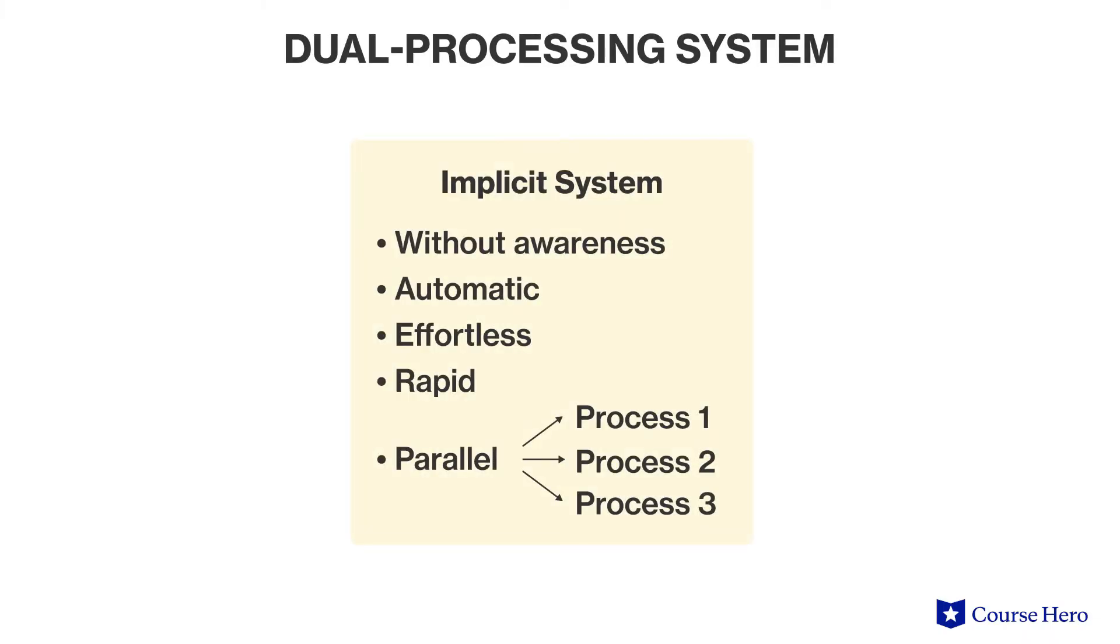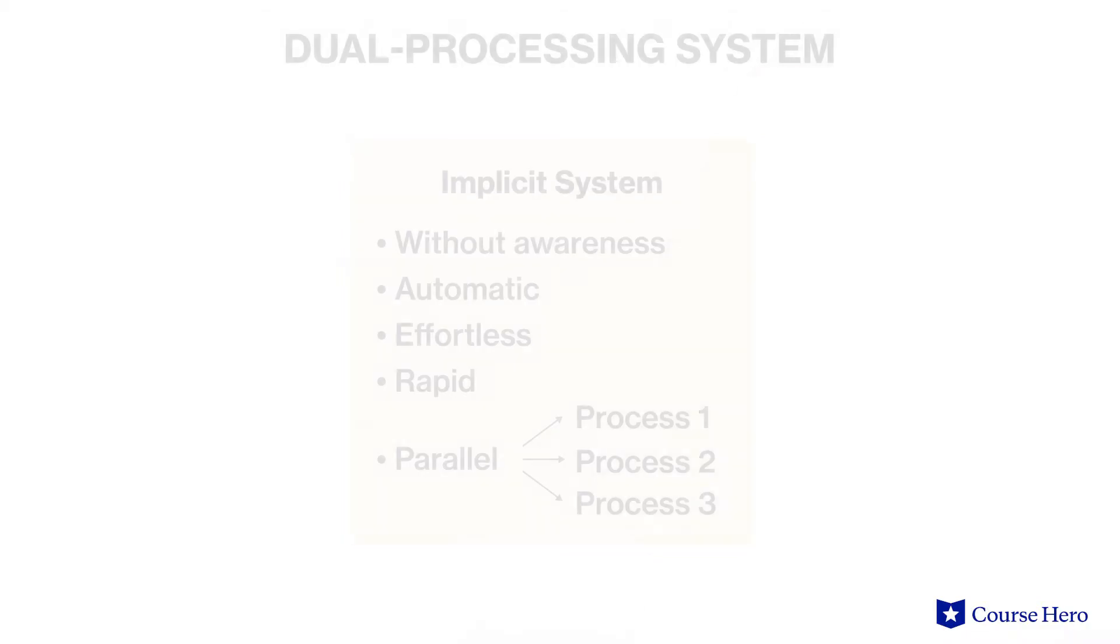The implicit system responds automatically to stimuli without conscious thought. For example, most people can immediately recognize an angry face or tone of voice. They don't have to stop and think about what emotion is being expressed.